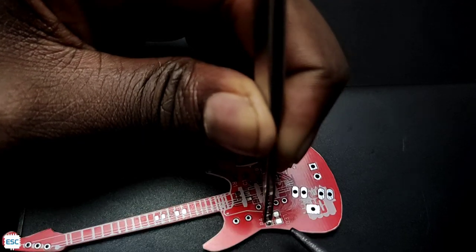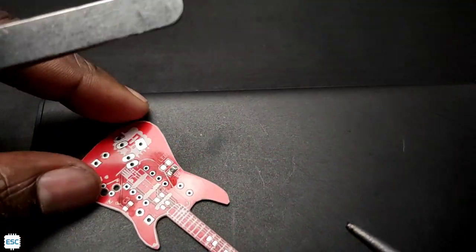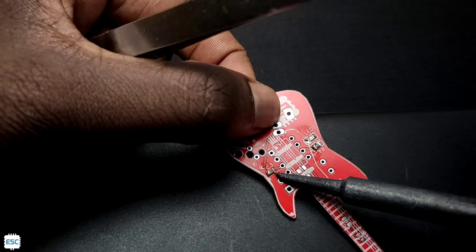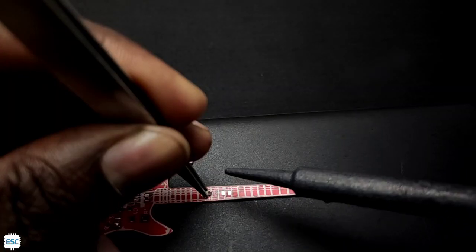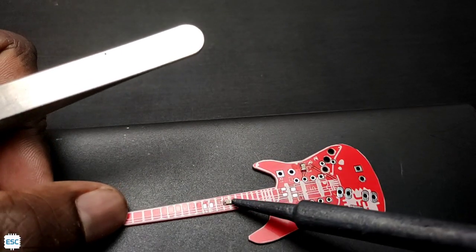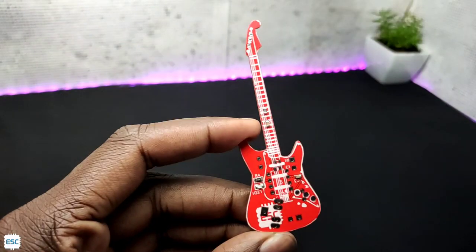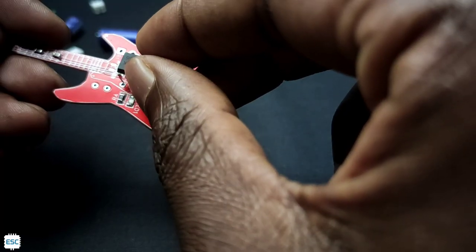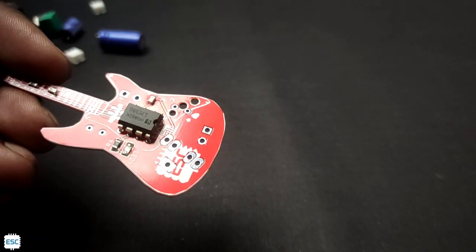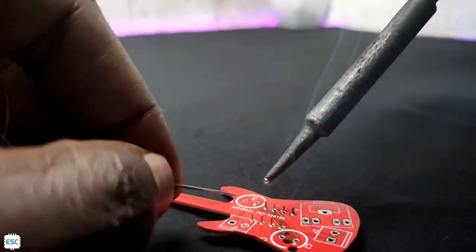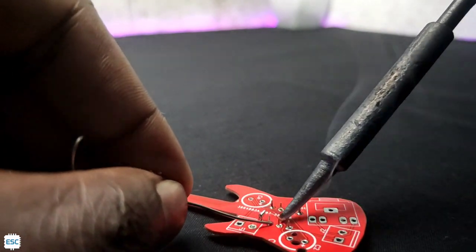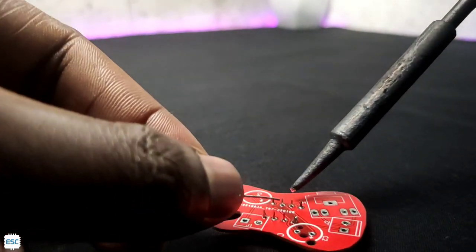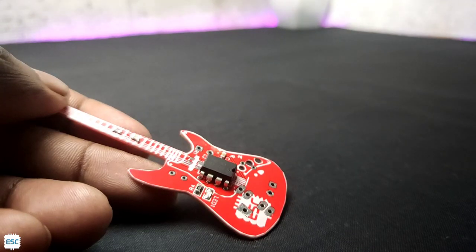Now let's solder the SMT components first. I'm soldering with my normal soldering iron. After finishing the soldering of SMT components, I started the soldering of through-hole components. I started with the LM386 IC. This is just placing the components in their right holes and soldering.